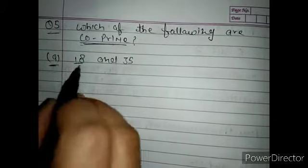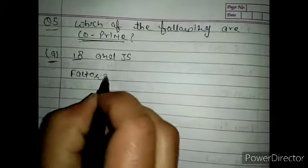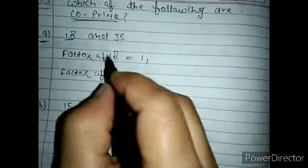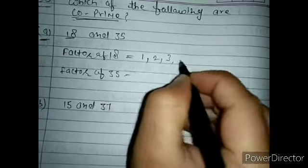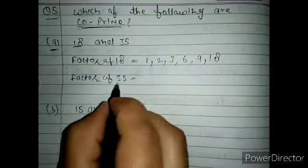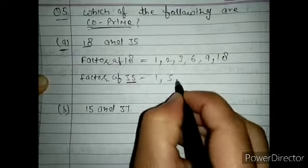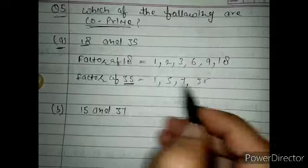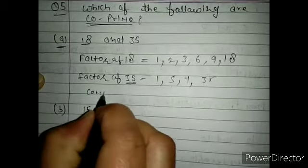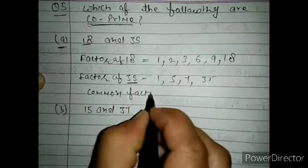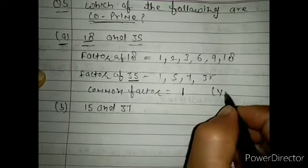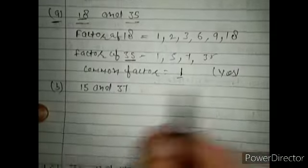Find the factors of 18: 1, 2, 3, 6, 9, 18. Factors of 35: 1, 5, 7, 35. The only common factor is 1, so these two numbers are co-prime. If any factor other than 1 were common, they would not be co-prime.